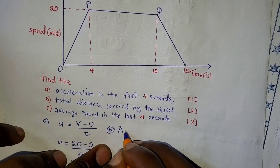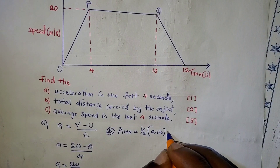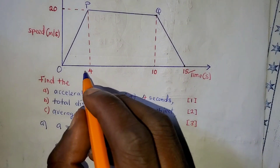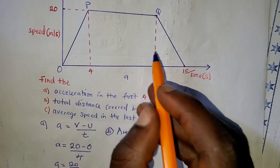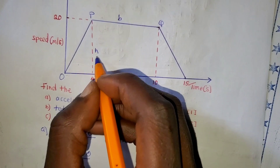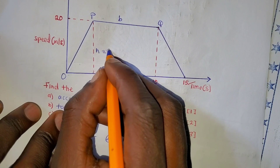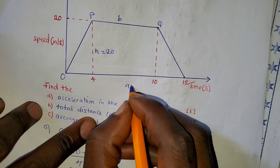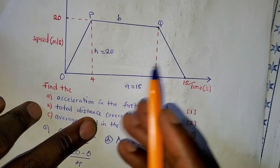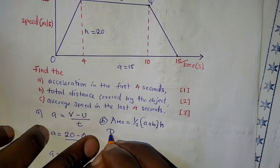The area of a trapezium is: Area = ½ × (a + b) × h, where h is the height. Here, the parallel side 'a' runs from 0 to 15, so a = 15. The parallel side 'b' on top runs from P to Q, which is from 4 to 10, so b = 10 − 4 = 6. The height h is the speed axis from 0 to 20, so h = 20.